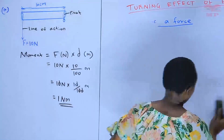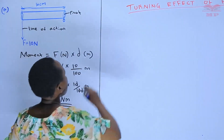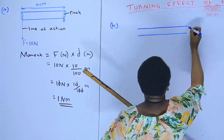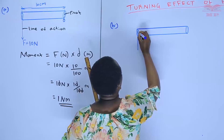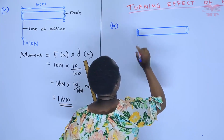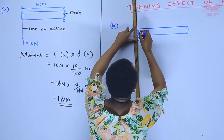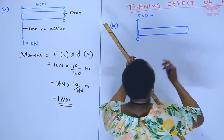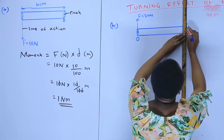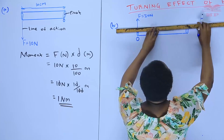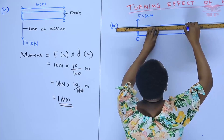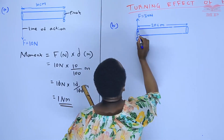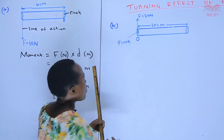Now we look at example number 2, part B. We are still calculating moment. In this figure, we have a fixed point O and a force acting in the opposite direction. The force is 13 Newtons, and the distance given is 20 centimeters. This is the pivot.